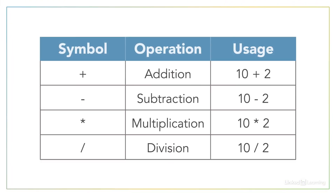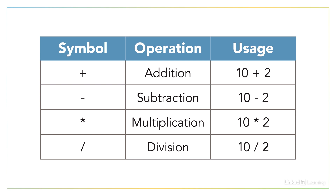In this table, you can see a partial listing of some operators that should be familiar to you: the plus symbol used for addition, minus for subtraction, an asterisk or star to represent multiplication, and finally a forward slash for division. These are known as arithmetic operators, as they take numbers for their input and perform an arithmetic operation.